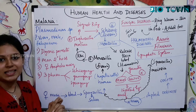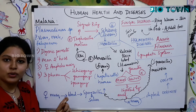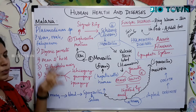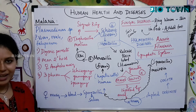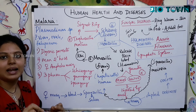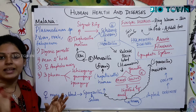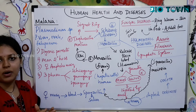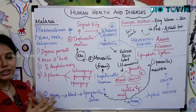In this session we will talk about the life cycle of Plasmodium. Plasmodium is the causative agent for malaria. Plasmodium has different types of species: Plasmodium vivax, ovale, falciparum. The vector is the female Anopheles mosquito, and it acts as a vector for causing malaria.